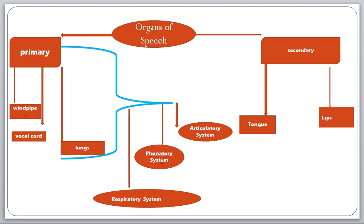To summarize: sounds received from outside go to the lungs, the lungs push the air to the vocal cord, and the vocal cord converts the air into speech sound. The respiratory system receives air from outside, the phonatory system converts that air into voice, and the articulatory system completes the final process of producing the speech sound.